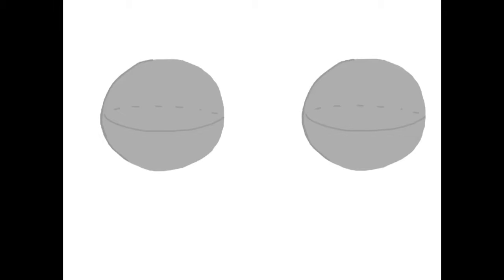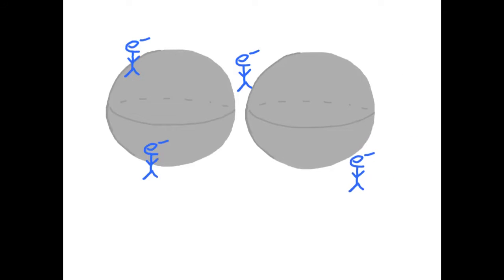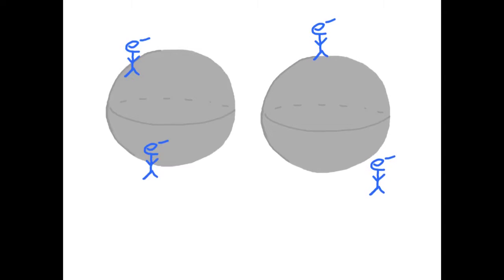Say we have two conducting spheres of identical size. We give one of those spheres an excess charge of three electrons, and the other one has an excess charge of one electron. Think about what might happen if those two spheres came into contact. You guessed it. Those charges are going to want to spread out as much as they can. So we're going to have an even distribution of two excess charges each. Notice total charge is conserved, and the flow of electrons favored decreasing electric potential energy, just like if they were falling.